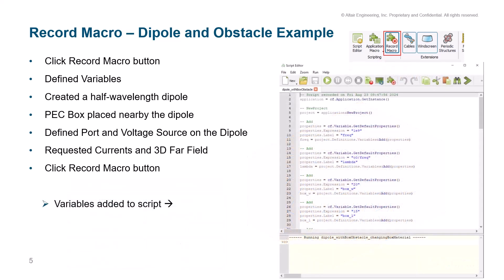Here's the first portion of the LUA script generated by the record macro feature — a list of variables. Near the top we have frequency: we get the default properties of the variable, assign an expression (in this case one gigahertz), give it a label such as 'freq' for frequency, and then set those properties for the variable. We also have an internal data reference for frequency that we can call and modify later in the code.